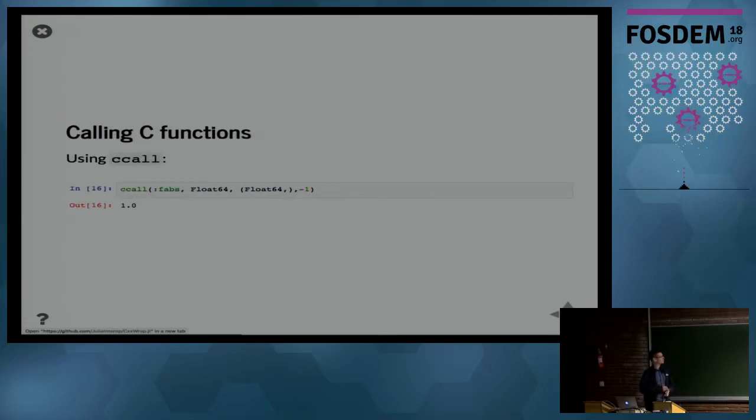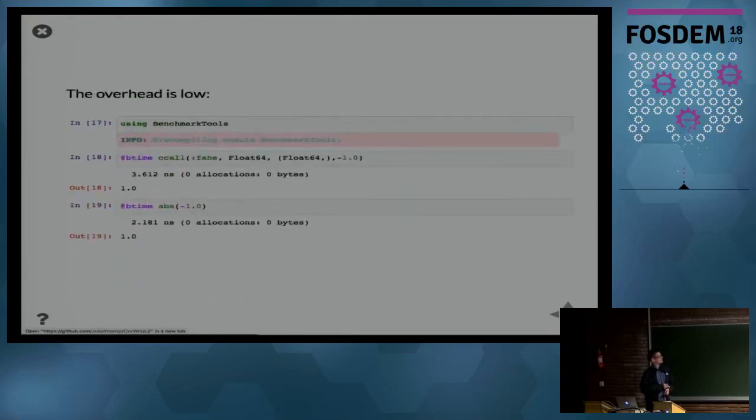Calling C functions happens through the ccall primitive. It's not really a function but it does something at the LLVM level directly. We can call the fabs function to get the absolute value using the standard math library of the value minus one, and it returns one as expected. Using the BenchmarkTools package, we can get an idea of the overhead that this induces. Calling the C function here takes about 3.6 nanoseconds. We can also compare this with the native absolute value function in Julia, and we see that considering this is such a small function, the overhead is really small.